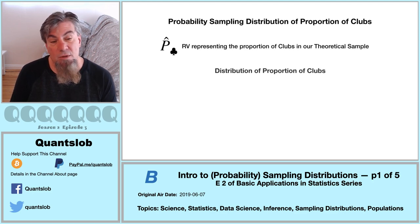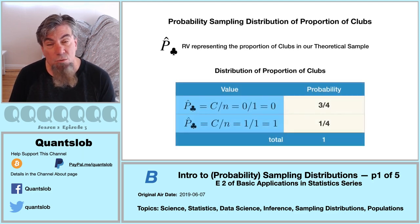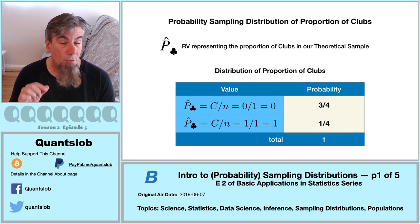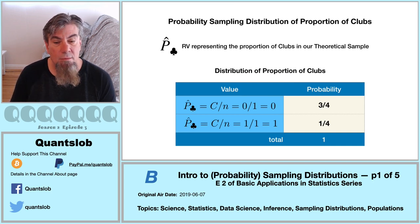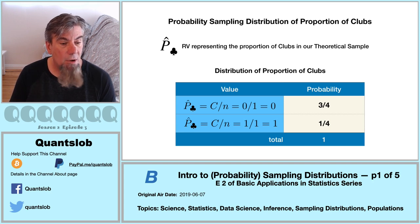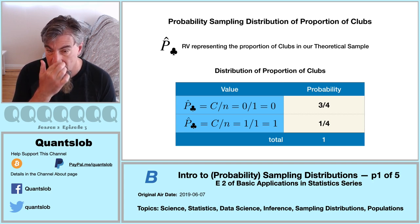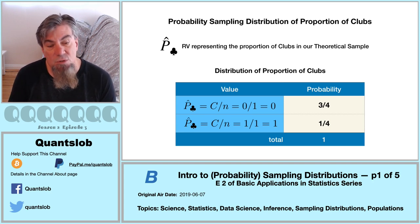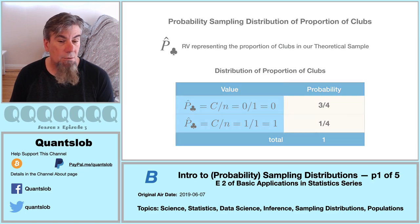What we're showing here is the probability sampling distribution of our sample statistic — number of clubs in our theoretical sample of size one. The probability that one card in our sample of one is clubs is one-fourth. The probability that none of the one card is clubs is three-fourths. We can easily convert the sample number of clubs into sample proportion of clubs, simply by dividing by the sample size — in this case, one.